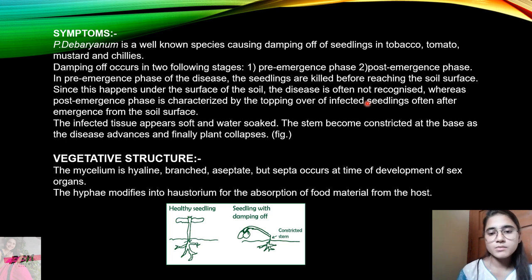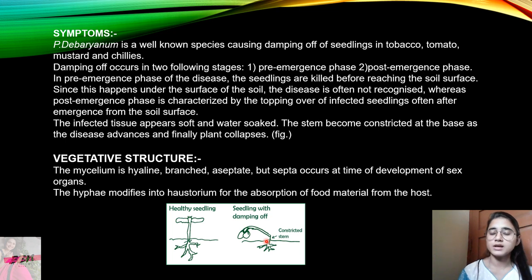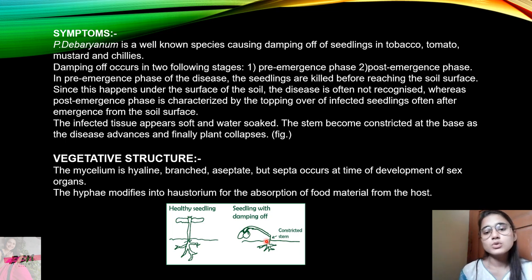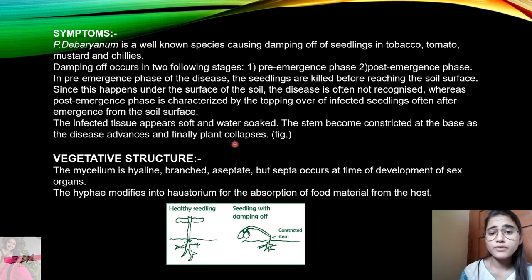In the post-emergence phase, we can observe the damage. The seedling should be healthy but after some time the stem becomes constricted and the seedling dies. The infected tissue appears soft and water-soaked. The stem becomes constricted at the base as the disease advances and finally the plant collapses.